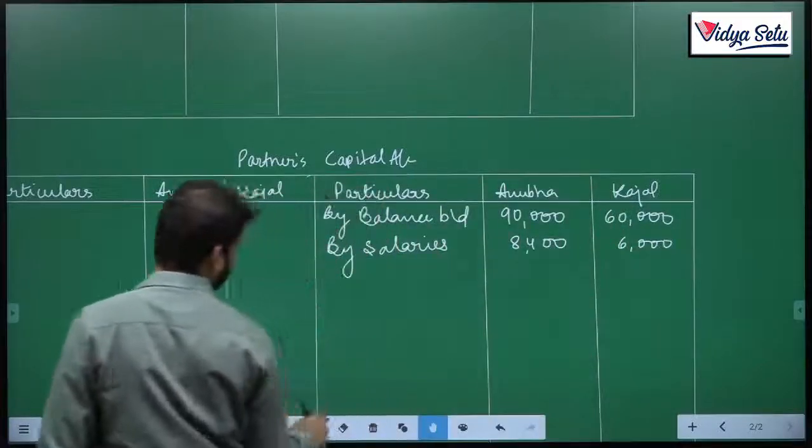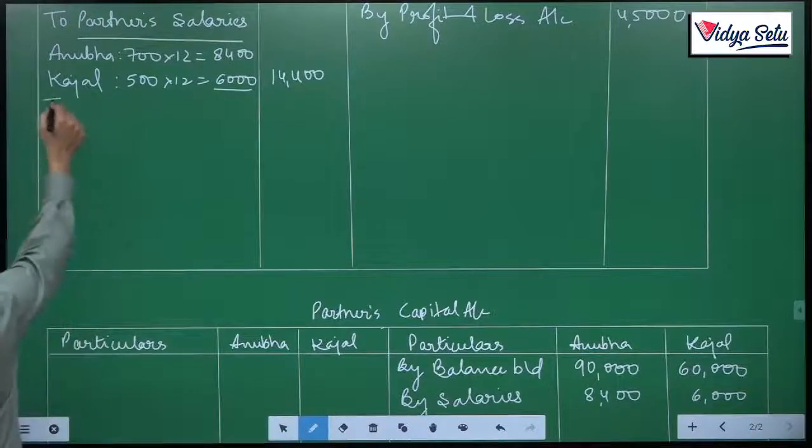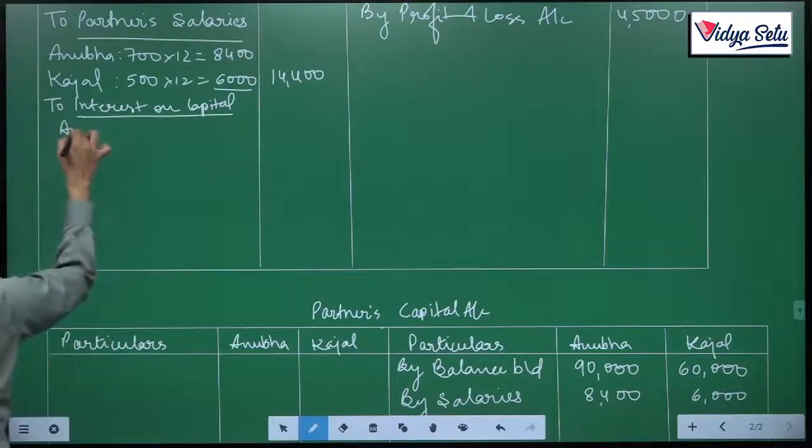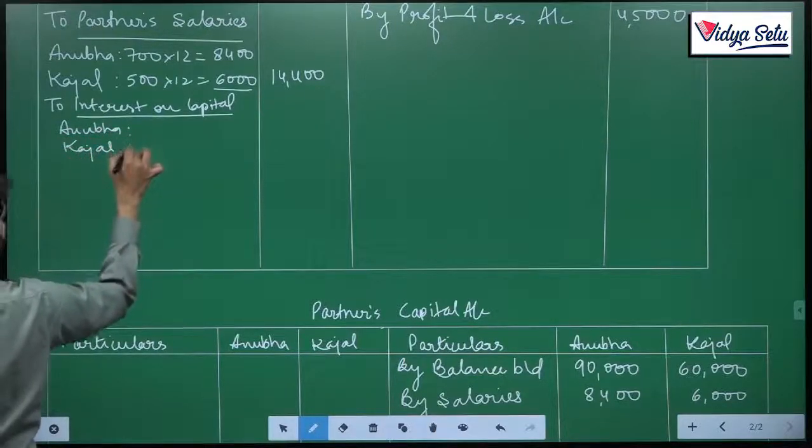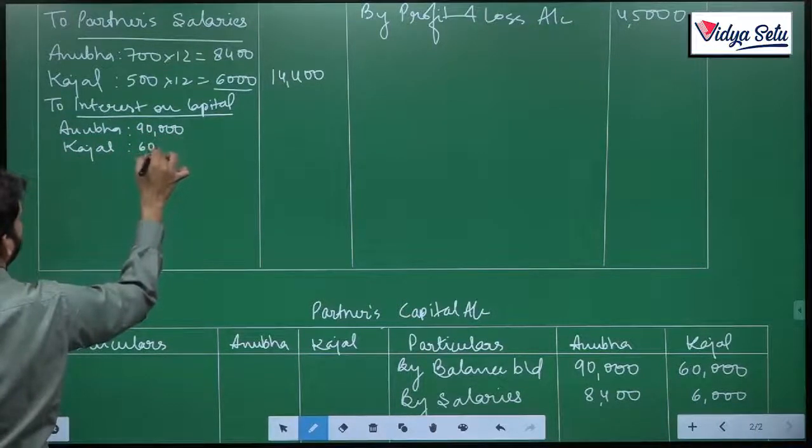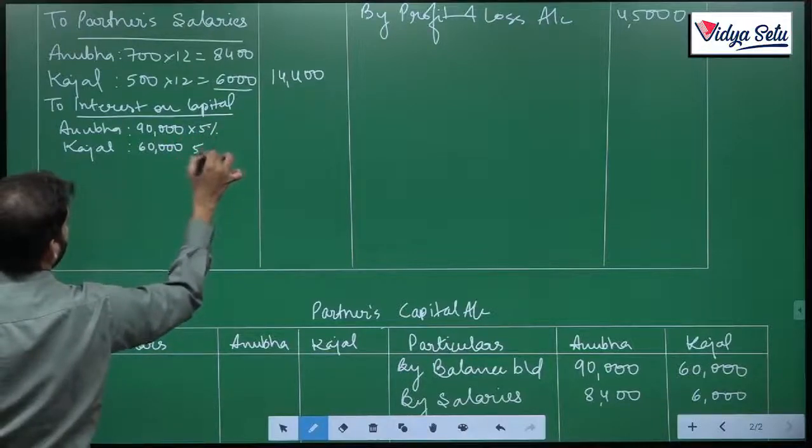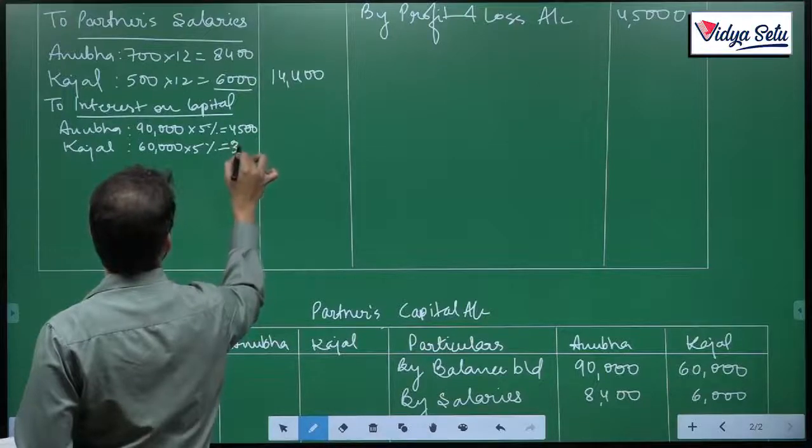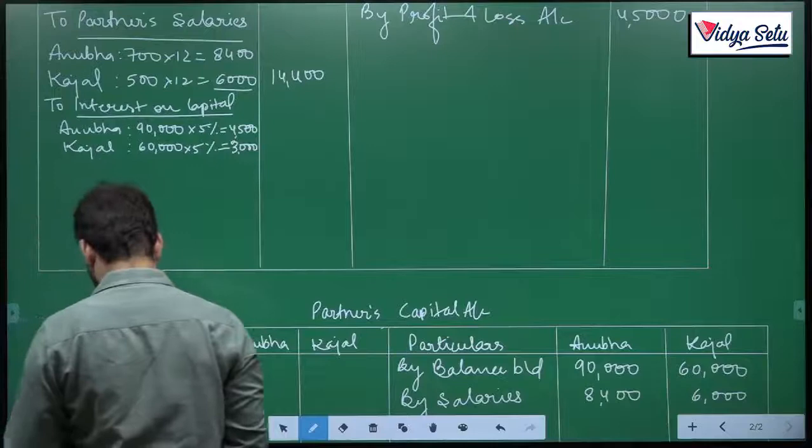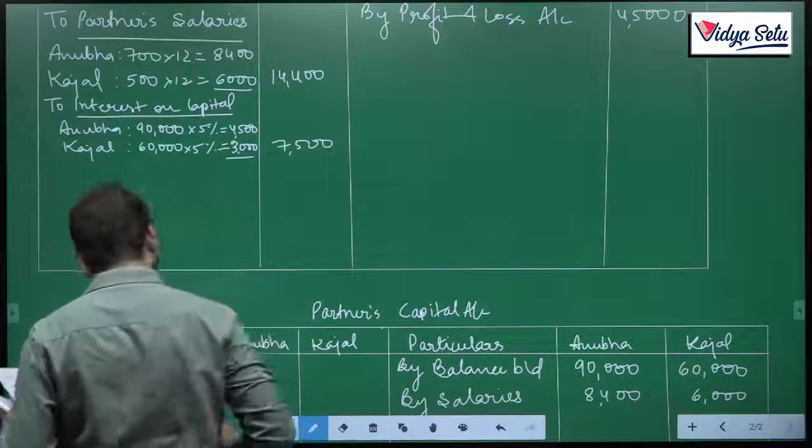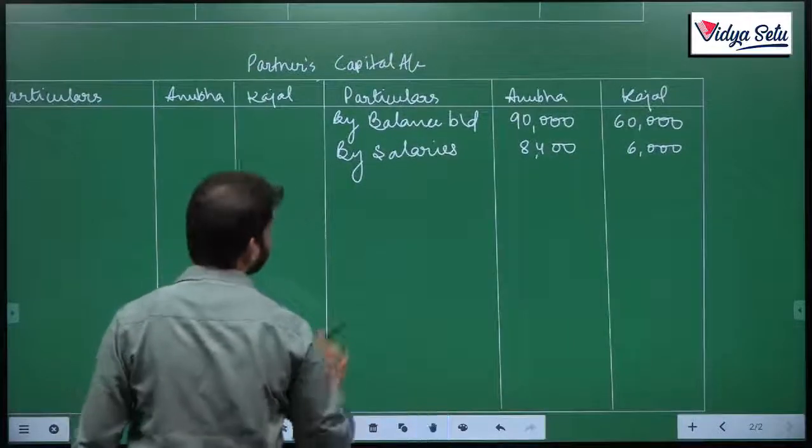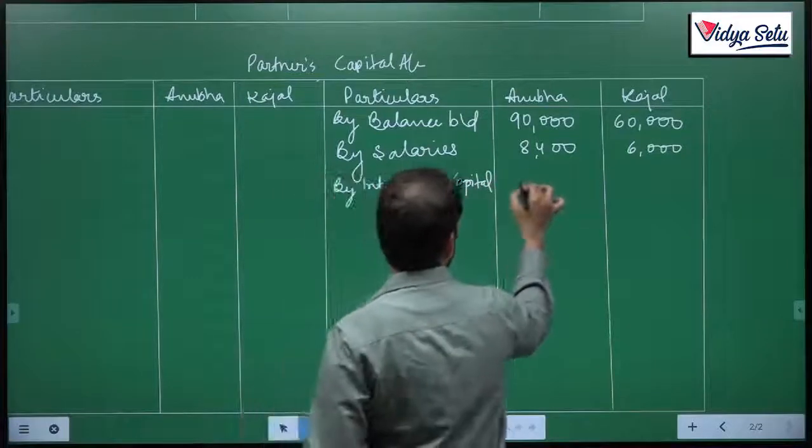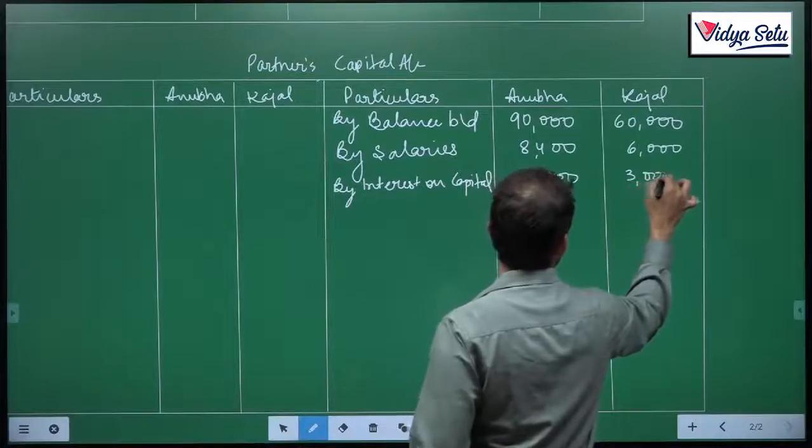Next thing is, I remember interest on capital at the rate of 5 percent, so Anubha on 90,000 and Kajal on 60,000, 5 percent. So 4,500 and 3,000. Interest on capital, post interest on capital here, 4,500 and 3,000, interest on capital is done.